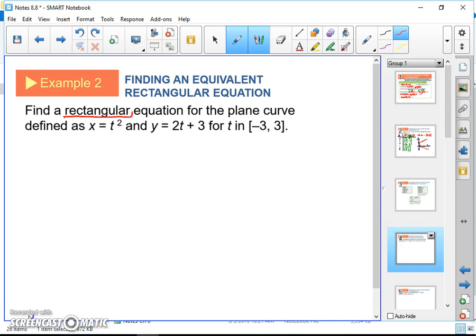When they say rectangular, what do they mean? X and Y. They want an X, Y equation. They don't want the parametric representation with T's in it. They want just X and Y.